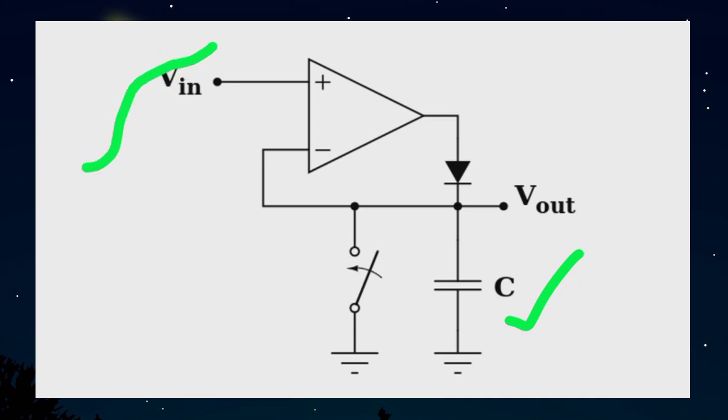Again, when your input starts increasing and it has a positive-going signal, positive comes here and the diode gets forward-biased and it charges the capacitor.